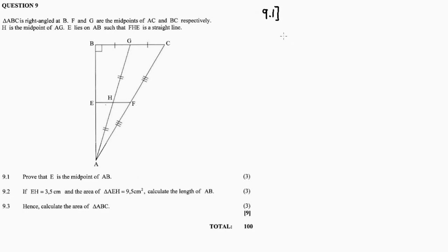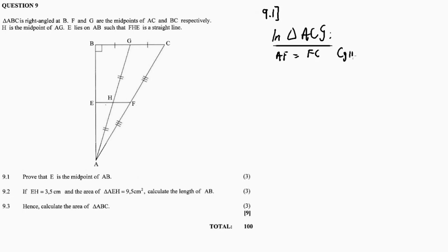So now in triangle ACG, we identify: AF equals FC — this is given since F is the midpoint of AC. And AH equals HG — this is also given since H is the midpoint.